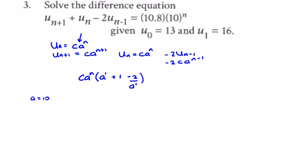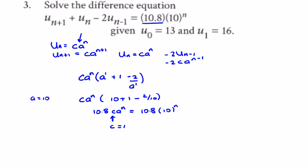If a equals 10, we get c·a^n equals 10 plus 1 minus 2 over 10, which is 11 minus 0.2, giving 10.8. So 10.8·c·a^n equals 10.8 times 10^n when a is 10. That means c equals 1.